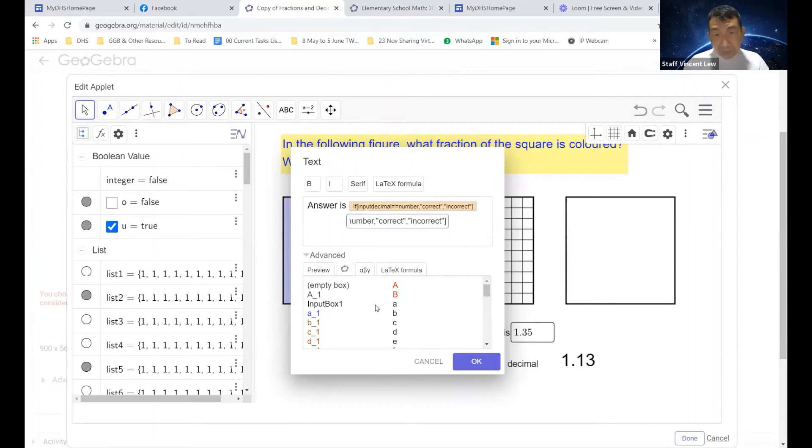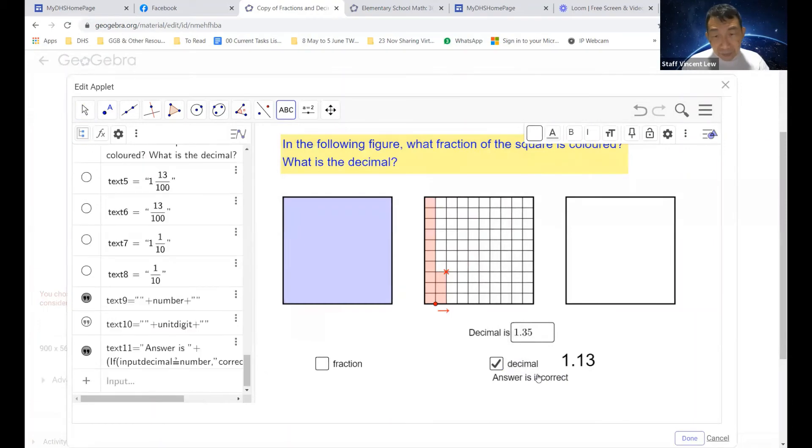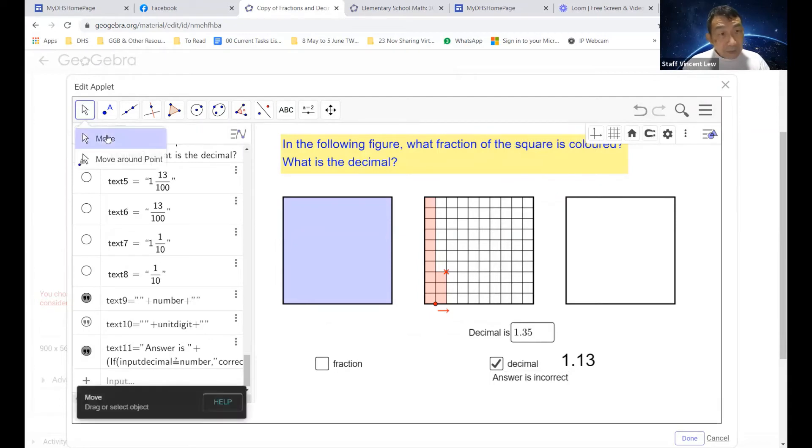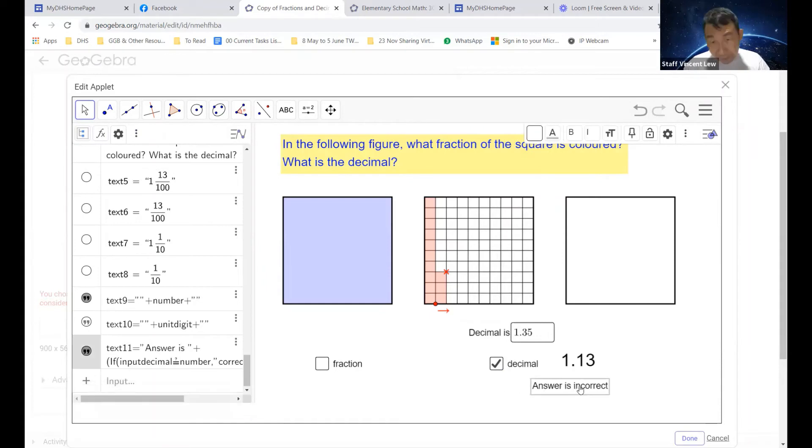So let me click okay. See, the answer is incorrect. Okay now, let's click on the move tool again. Move the text box over there. So the answer is incorrect. Now what happens when I type in 1.13? The answer is correct.